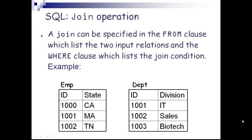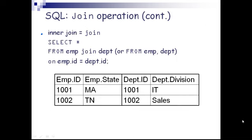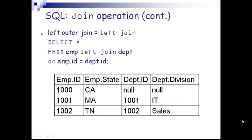For example, we have two tables: emp with fields ID and state, and DEPT with fields ID and division. INNER JOIN (equal to JOIN): SELECT * FROM emp JOIN DEPT ON emp.id = DEPT.id. This joins the tables where emp.id equals DEPT.id, returning emp ID, emp state, and department fields.